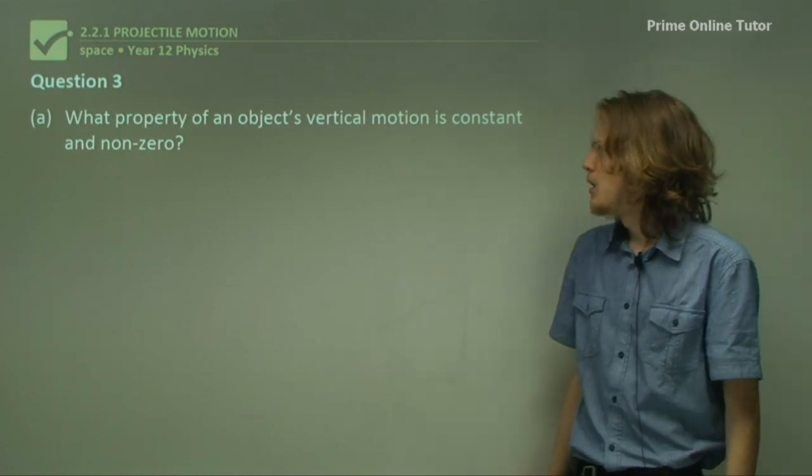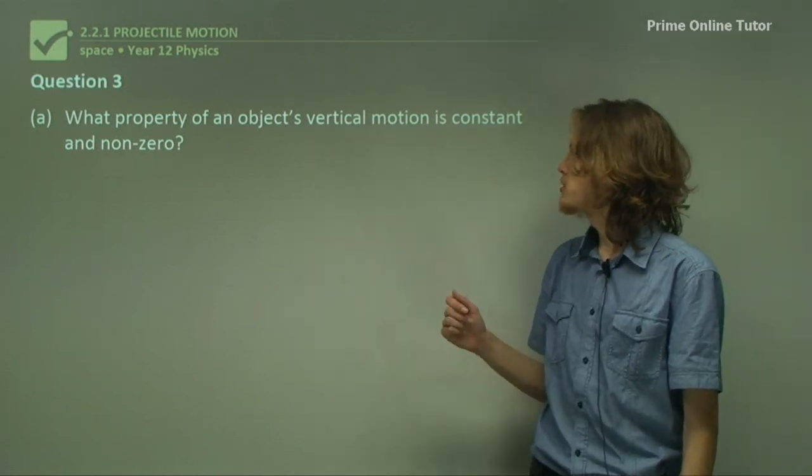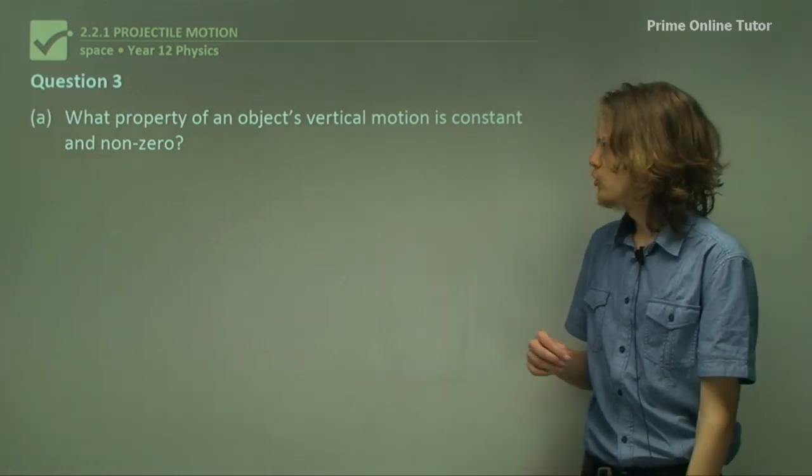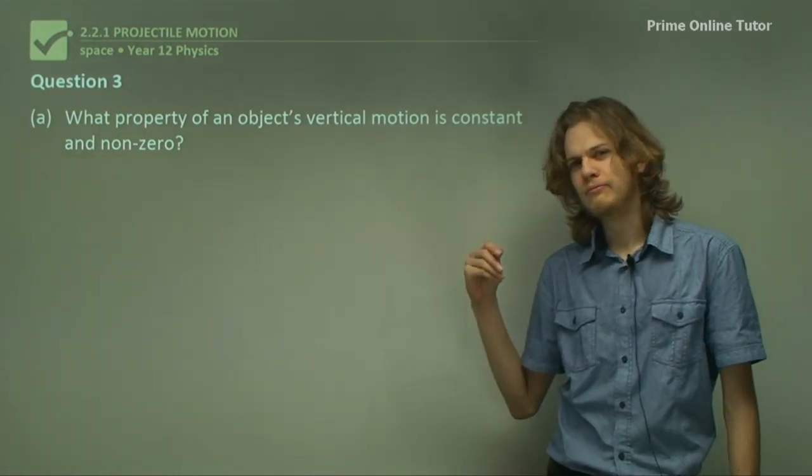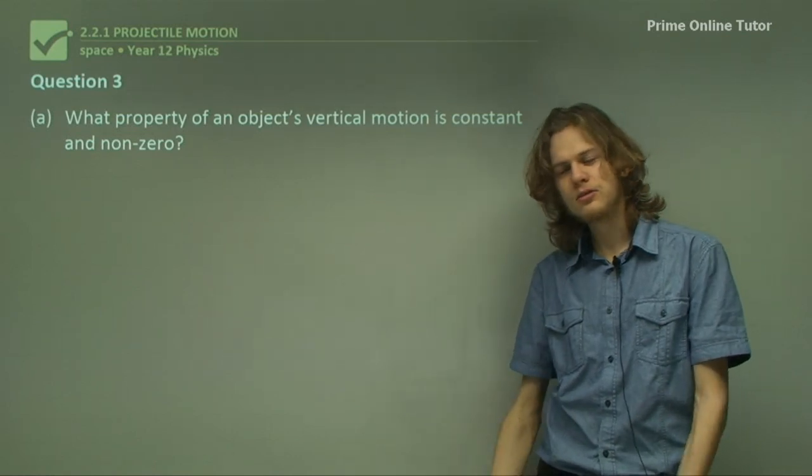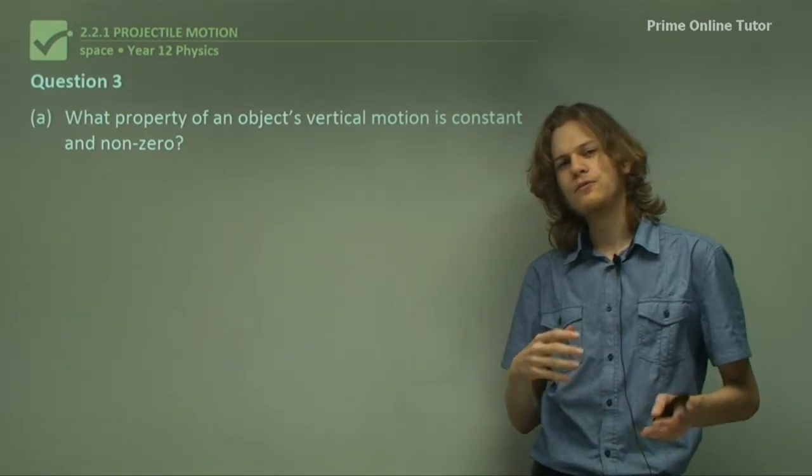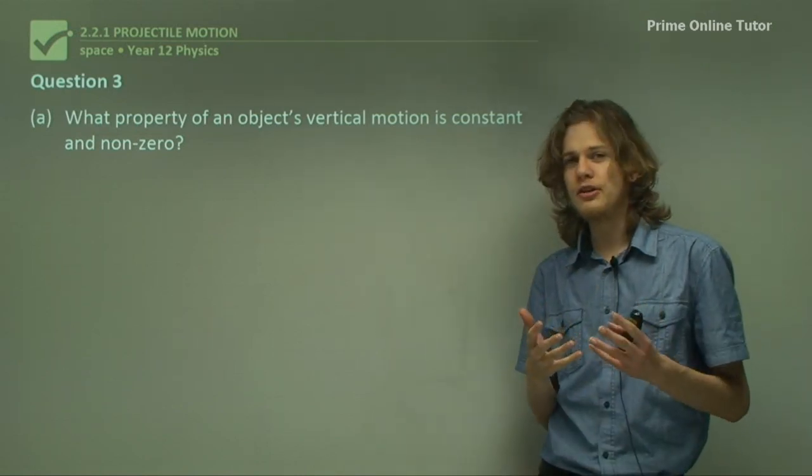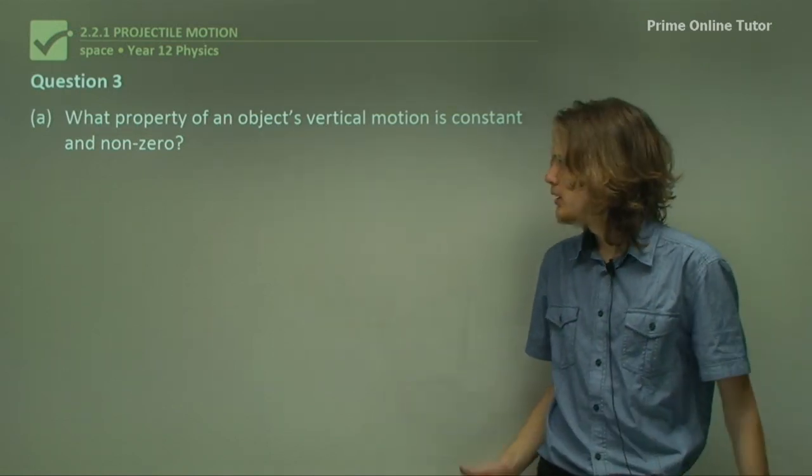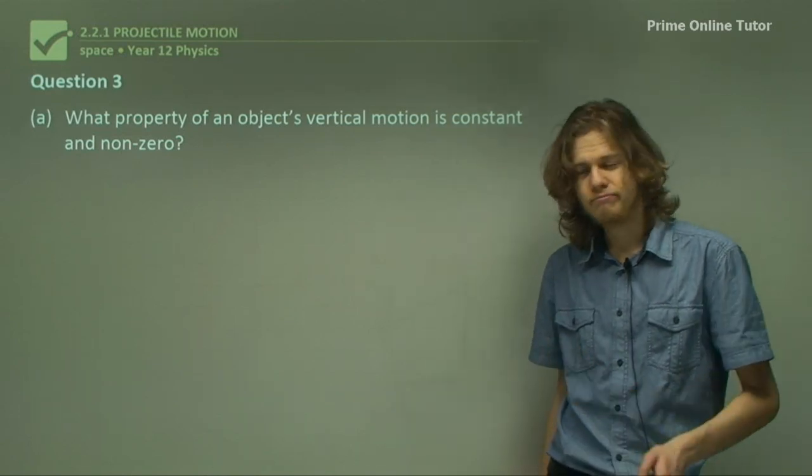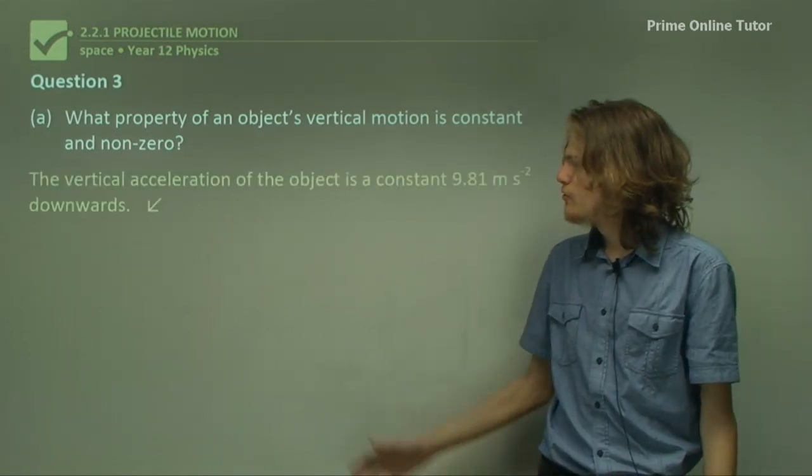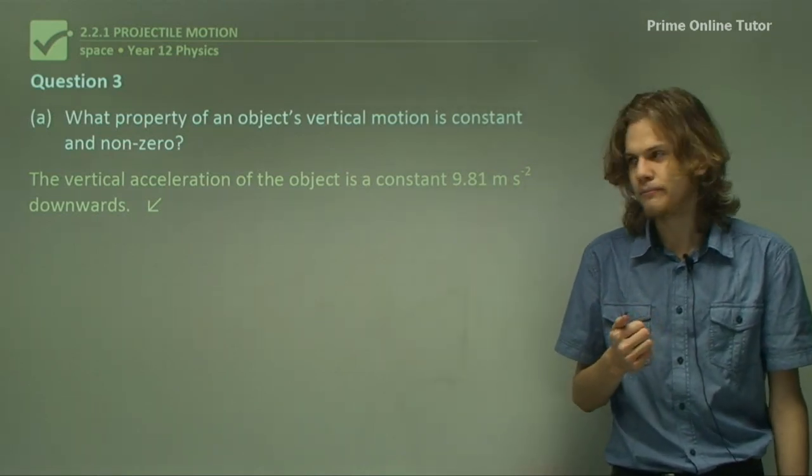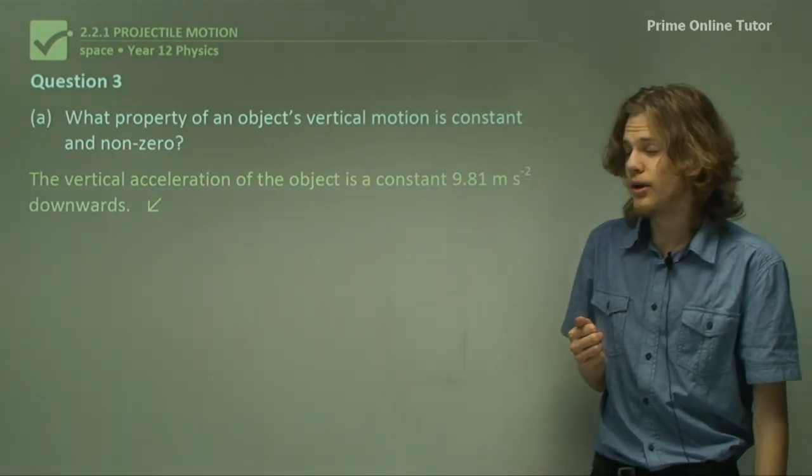Question 3, part a. What property of an object's vertical motion is constant and non-zero? An object's vertical motion depends on its initial velocity and the force of gravity on it. It turns out that the acceleration of gravity is constant, as we know, and it's non-zero. So the vertical acceleration of the object is at a constant 9.81 meters per second squared, and the direction is downwards.